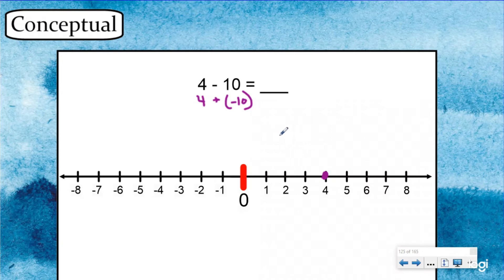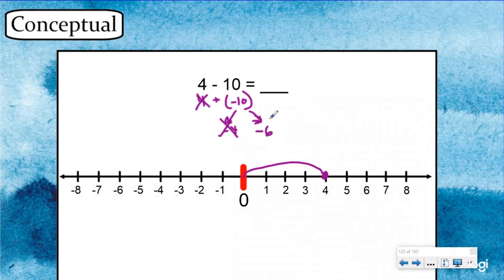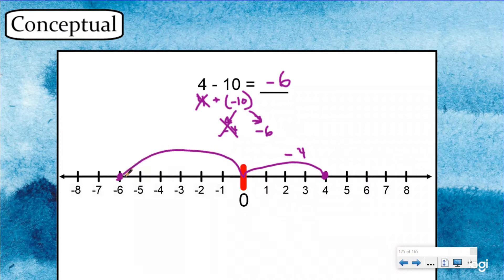If you start at four, how much would you need to get back to zero? Well, obviously you would need negative four. So we decompose negative 10 into negative four, and then the rest would be negative six. We take negative four to get back to zero — now we've canceled these out, made a zero pair. We're just left with negative six, and zero minus six would just be negative six. So my answer for four minus 10, or four plus negative 10, is negative six. I decomposed negative 10 into negative four and negative six, and used the making-zero strategy.